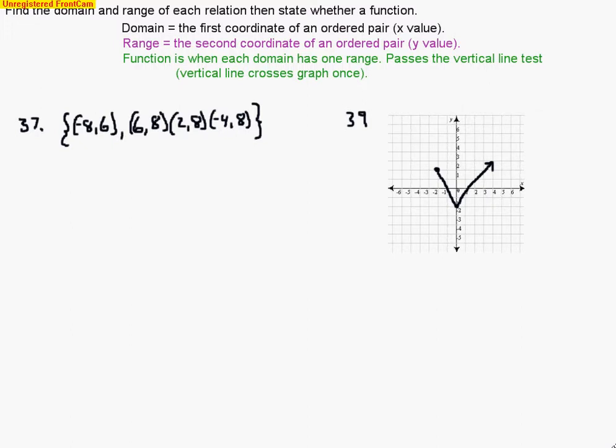So the last part, we're going to talk about domain and range of a relation, and whether a relation is a function or not. We've got a couple problems, 37 and 39 from the study guide. Let's take a look at number 37 first.